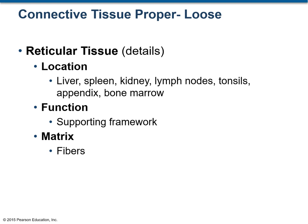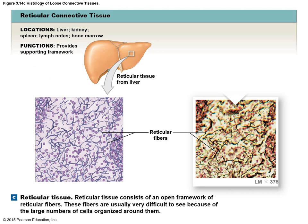The third type of loose connective tissue proper is reticular tissue. Its location includes the liver, spleen, and kidney, and its function is to provide a supporting framework. This figure shows reticular connective tissue — note the brownish black color of the section on the right side.